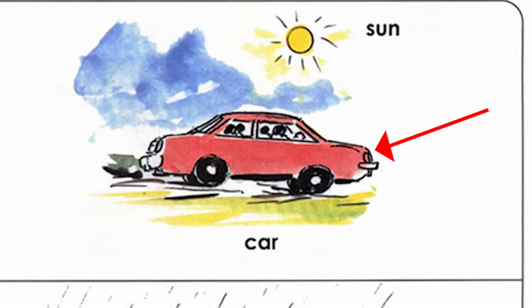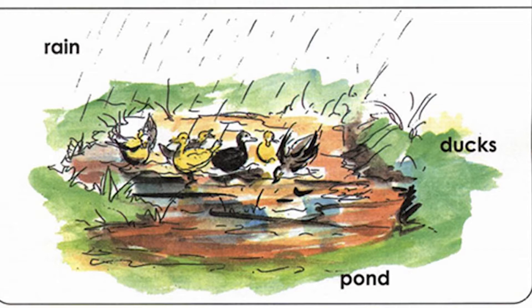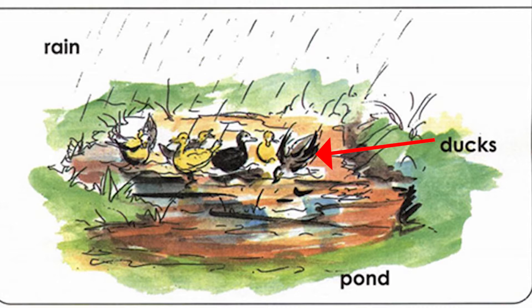Now the first picture — there is a car and there is sun. At the bottom, there is another picture. In this picture, we can see a pond. We have ducks, and something is happening in that picture. Can you tell me what it is? It is raining. It is a rainy day.